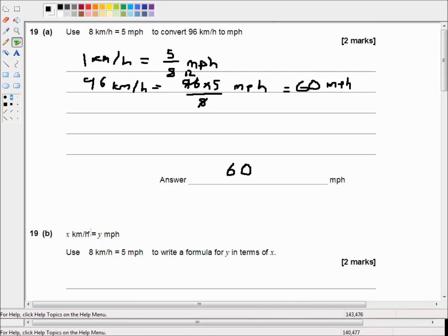So question 19b says x kilometers per hour equals y miles per hour. Use 8 kilometers per hour equals 5 miles per hour to write a formula for y in terms of x.